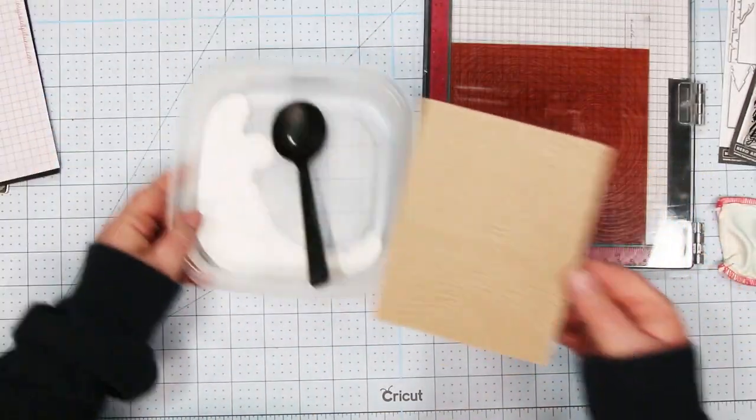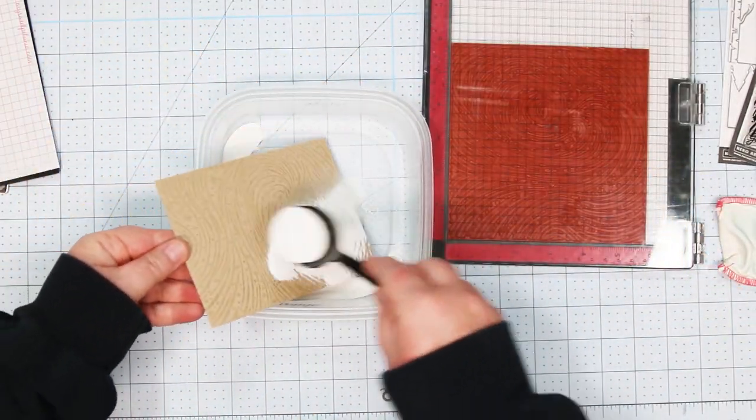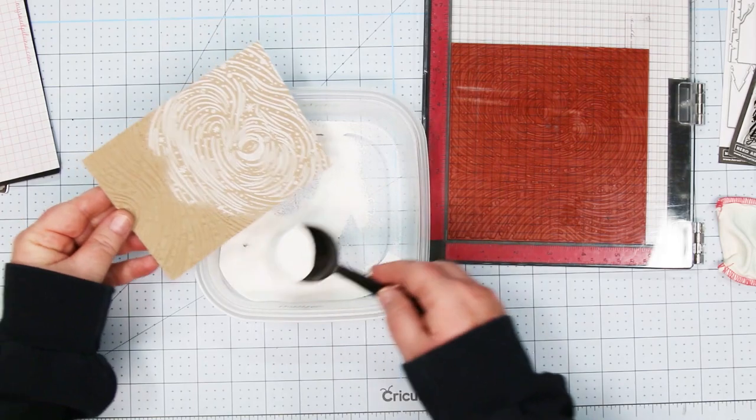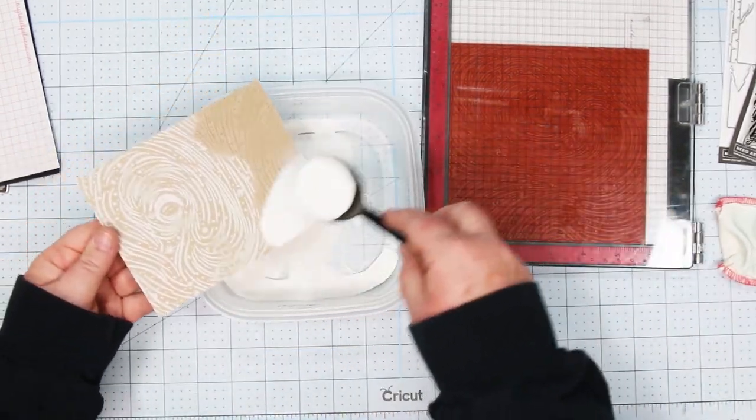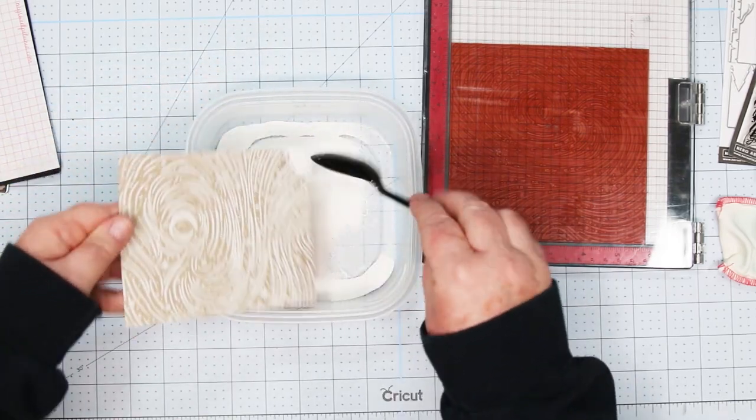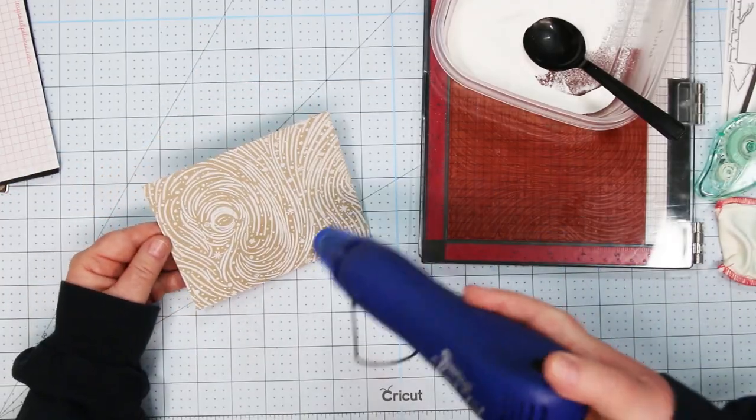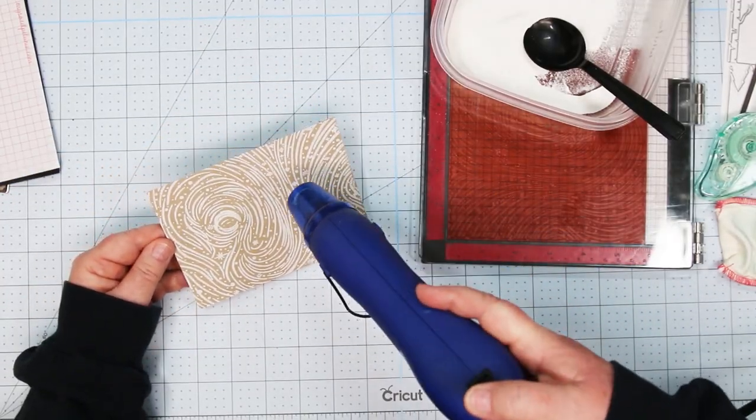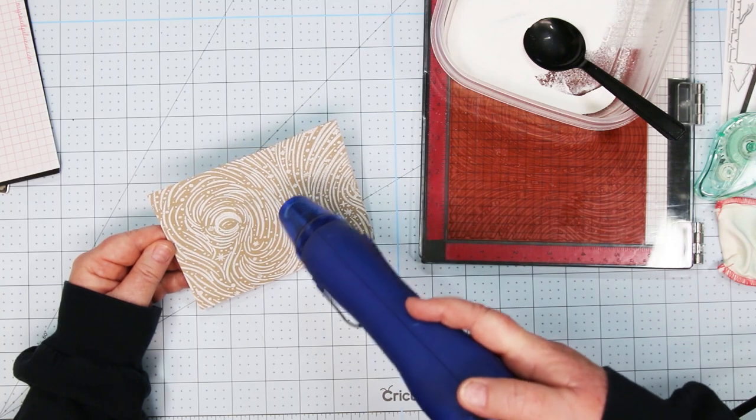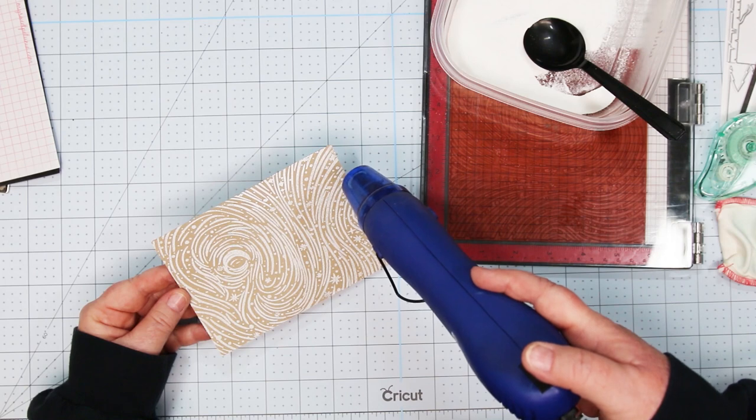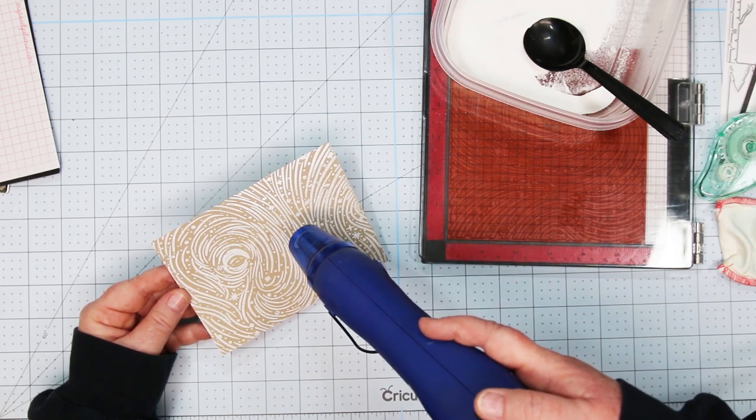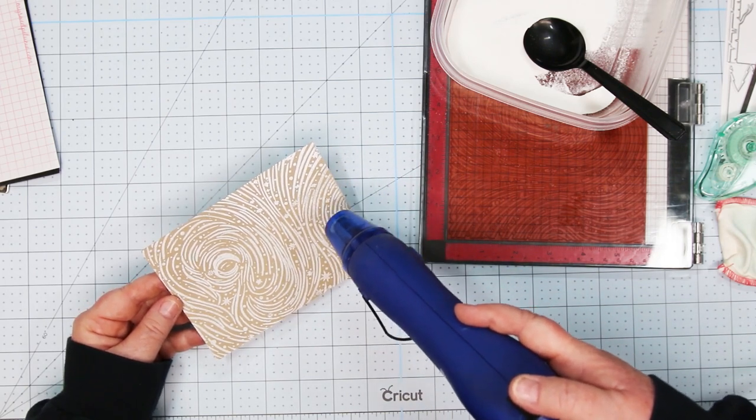And then we are going to cover it with the white embossing powder, shaking off the excess. I like to do half at a time. I find I get less spillage that way. There we go. And then we're going to heat set this and you'll see that it turns bright white and then that means that it's cooked. And I'm going to heat set the whole front of this card. It's going to make a beautiful backdrop for the little art piece that we're going to create.